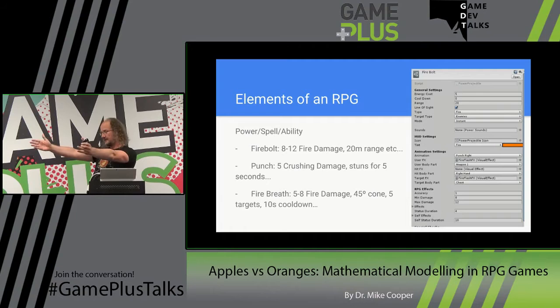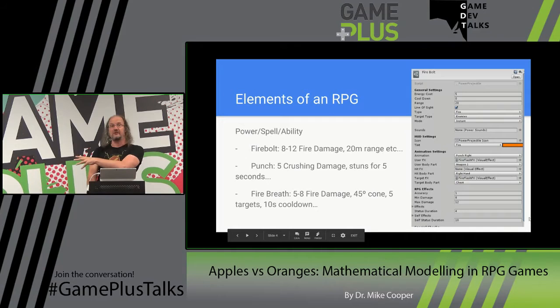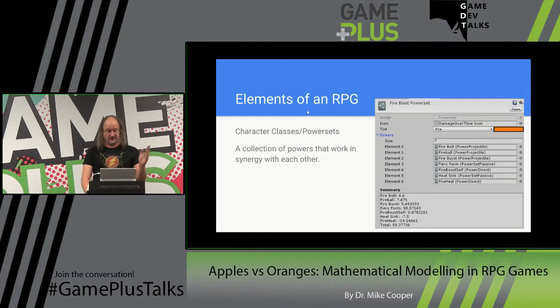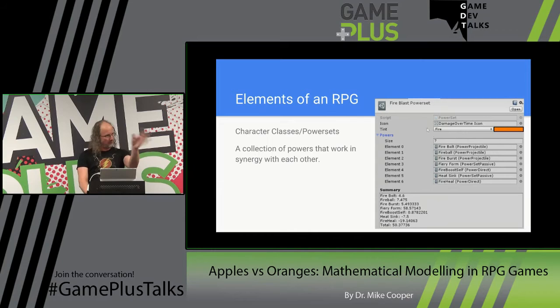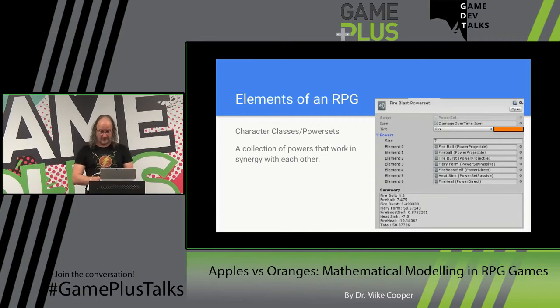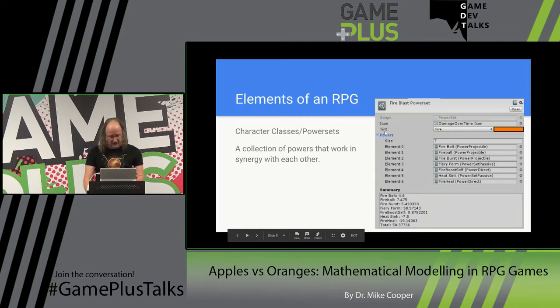You want to be able to rate these powers. Is this too powerful? Is this not powerful enough? If a punch did zero damage, it's probably useless. If it did 100 damage, it's probably too powerful. There's a sweet spot in between. These powers don't exist in isolation — they exist in a character class or a power set where everything synergizes. You might have a fire blast power set with a fire bolt, fire burst as spike damage with a cooldown, self heals, and so on.